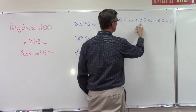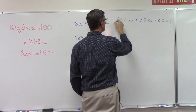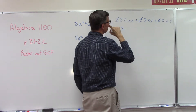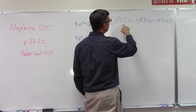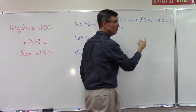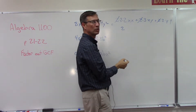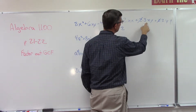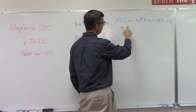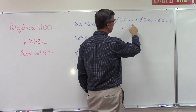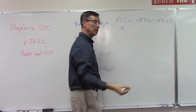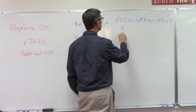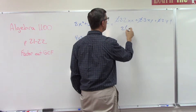Now what is the greatest common factor? I want to pull out everything that is a part of all of these. This one has a 2 in it, we also have a 2 here, 2 here, 2 here — so I'm going to pull out a 2. Can I pull out another 2? I could from these two but not this one, so that's not a common factor of all of them. Can I pull out an x? I can from these two but not from that one. A y? This one doesn't have any y, so in this case the only common factor is just the number 2.